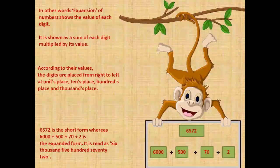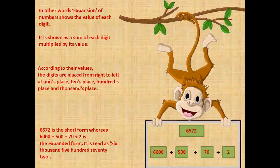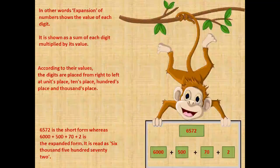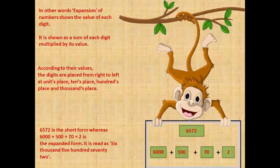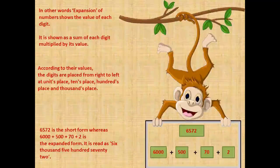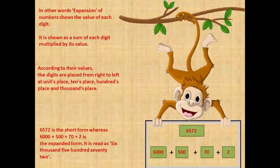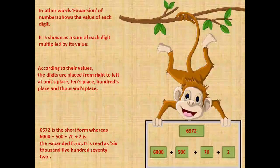5 is in the hundreds place. So 500 plus 70, that is 7 in the tens place, plus 2 in the units place. So this is how we are going to write the expanded form of a given number.